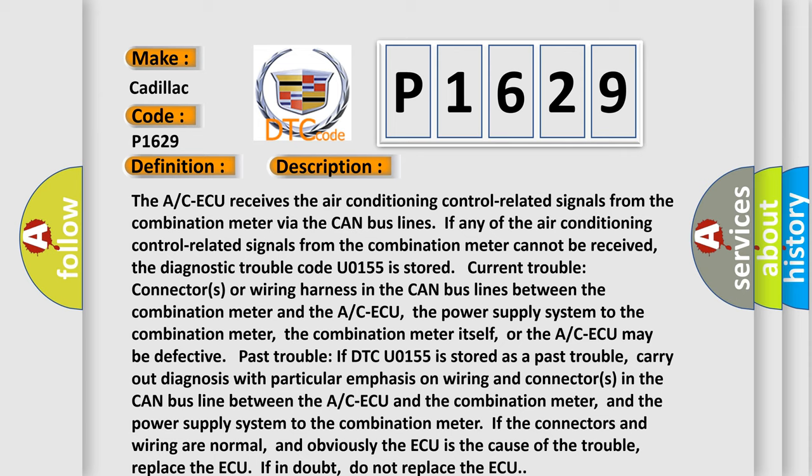Carry out diagnosis with particular emphasis on wiring and connectors in the CAN bus line between the A/C-ECU and the combination meter, and the power supply system to the combination meter. If the connectors and wiring are normal, and obviously the ECU is the cause of the trouble, replace the A/C-ECU. If in doubt, do not replace the A/C-ECU.